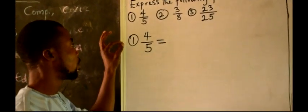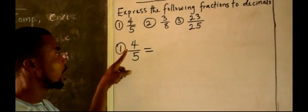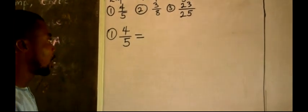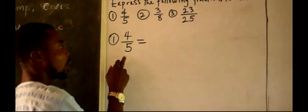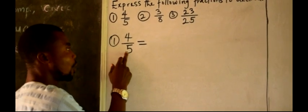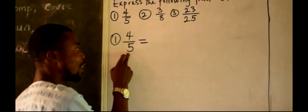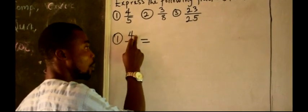We have 4 divided by 5. But if we want to express a decimal, you are using this down number to divide the up number.